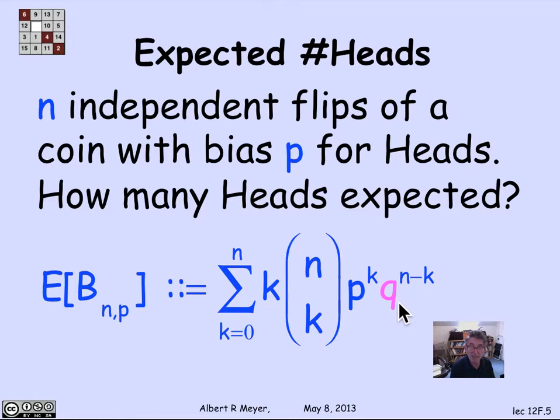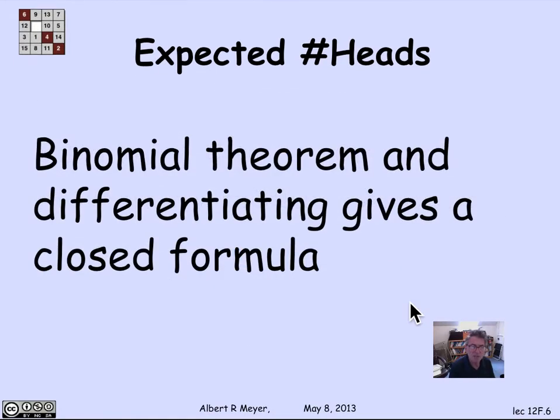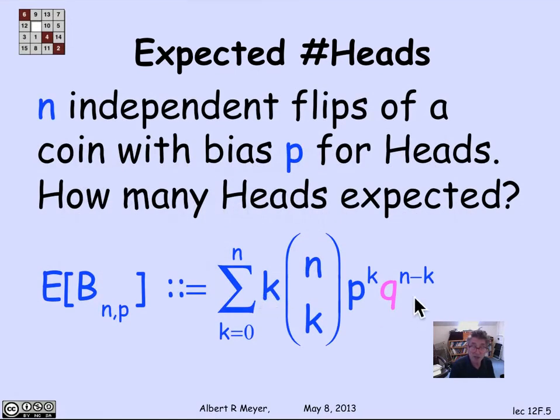So p plus q equals 1, and they're both non-negative, between 0 and 1. And when I express the expectation this way, it starts to look like something a little bit familiar. And our strategy is going to be to use the binomial theorem, and then the trick of differentiating it is going to wind up giving us a closed formula for this expression, for the expectation of the binomial random variable.